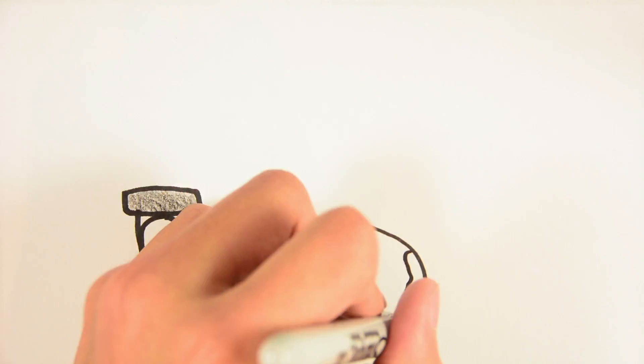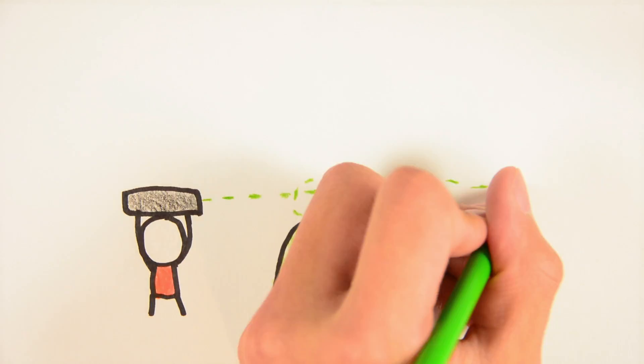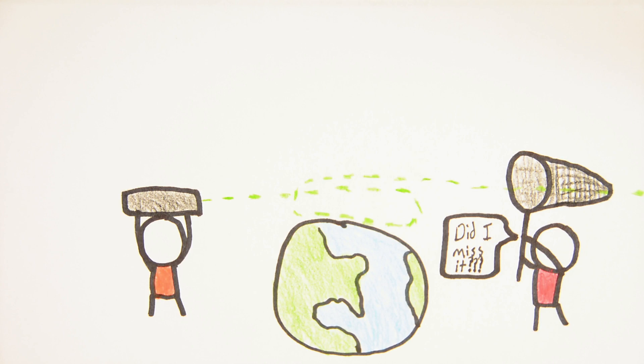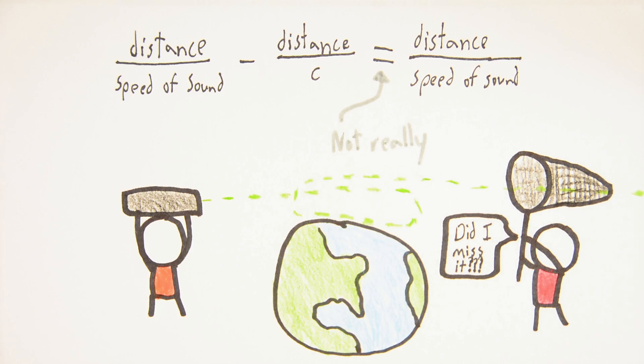Hear me out. Since light moves fast enough to travel around the world in 134 milliseconds, the light from lightning travels to your eye almost instantly. So how long the sound of thunder lags behind the flash of lightning is pretty much equal to how long it takes for the sound of thunder to reach you.